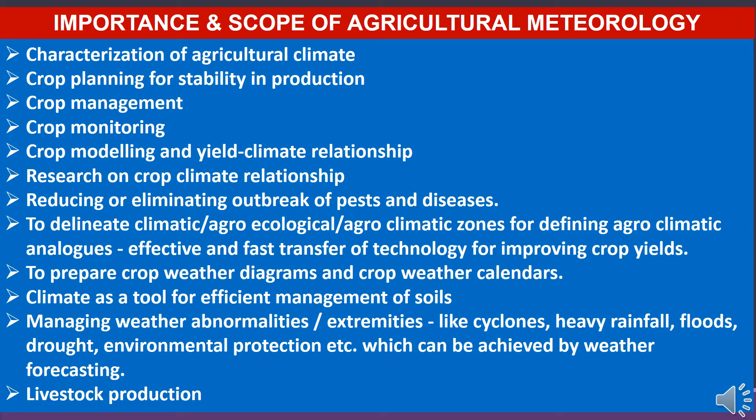Fourth is crop monitoring — to check crop health and growth performance, suitable meteorological tools such as crop growth models, water balance techniques or remote sensing techniques can be used. Fifth is crop modeling and yield-climate relationship — suitable crop models can provide information or predict results about growth and yields when current and past weather data is used. Sixth is research in crop-climate relationship — agrometeorology helps understand crop-climate relationships to resolve complexity of plant processes in relation to microclimate.